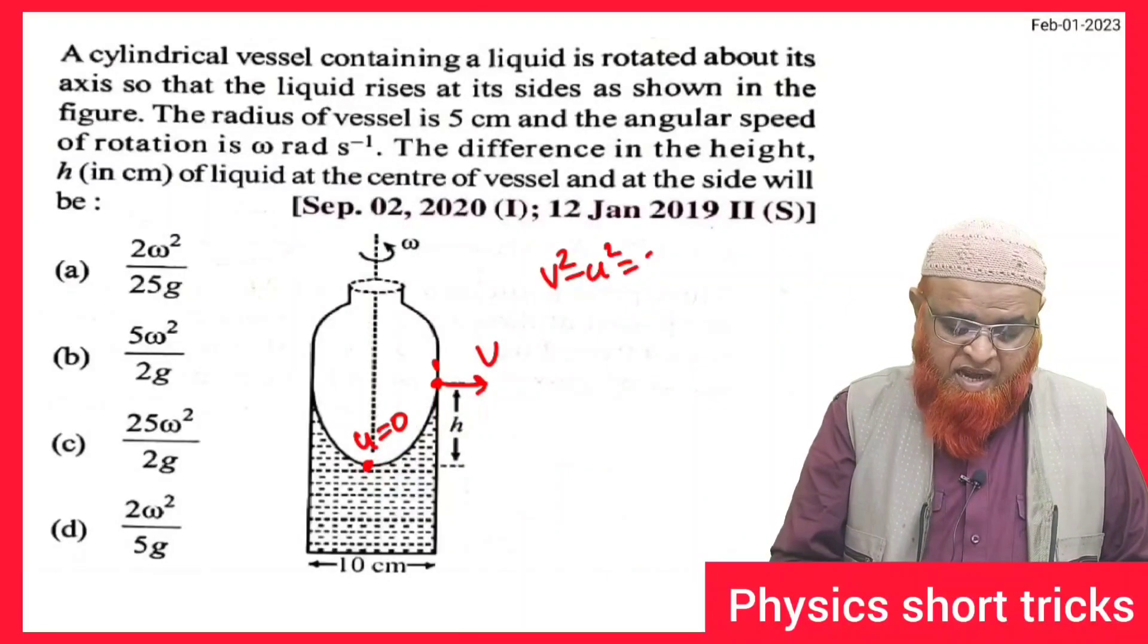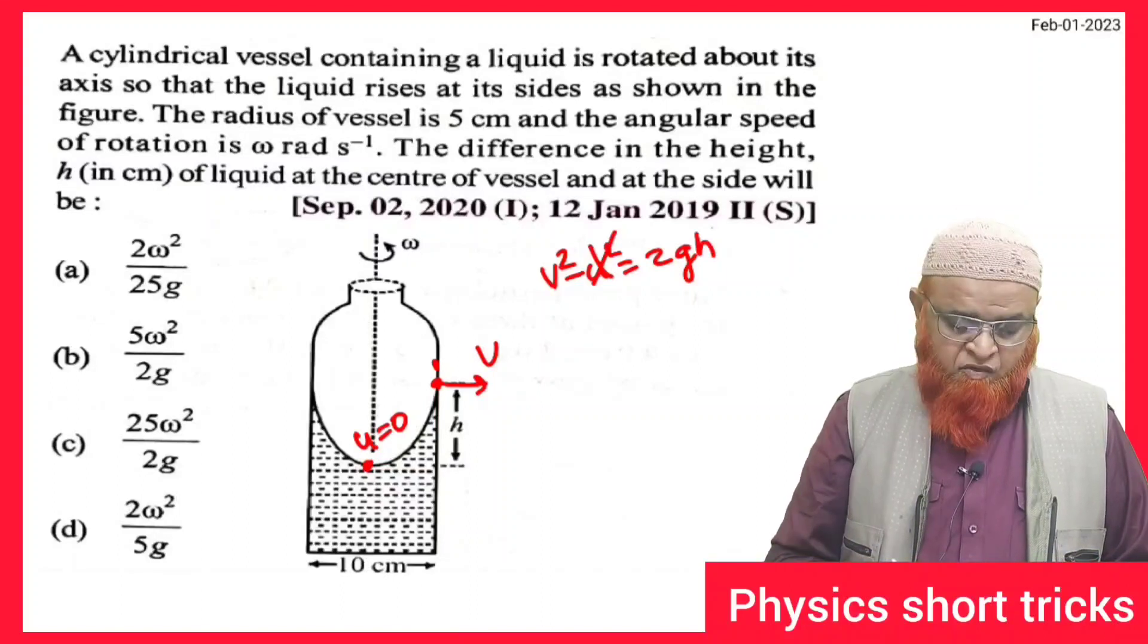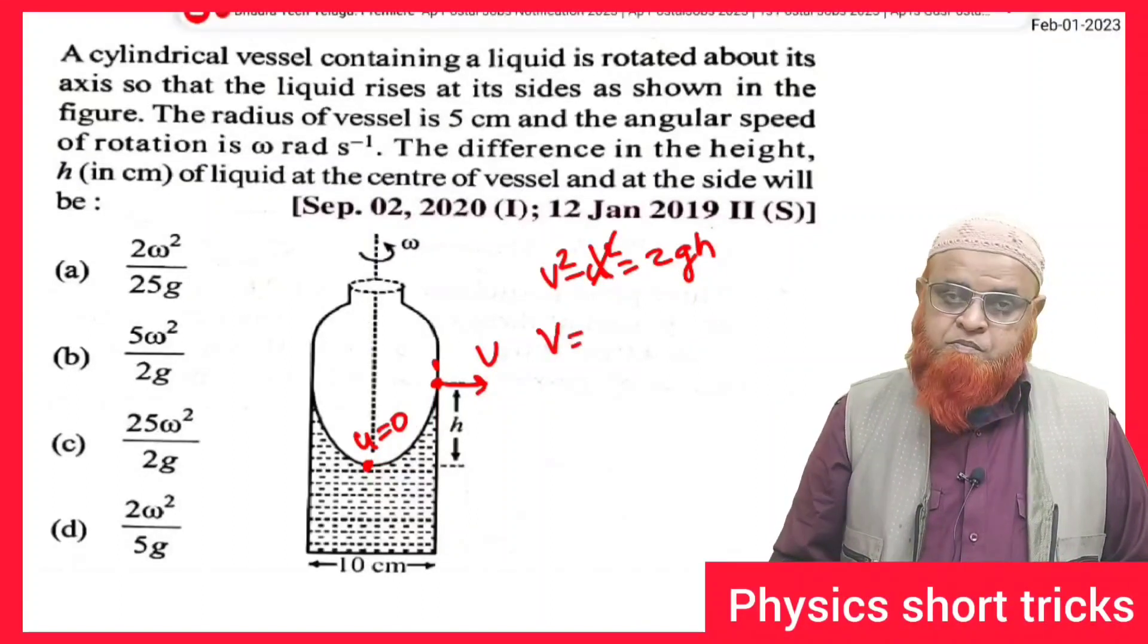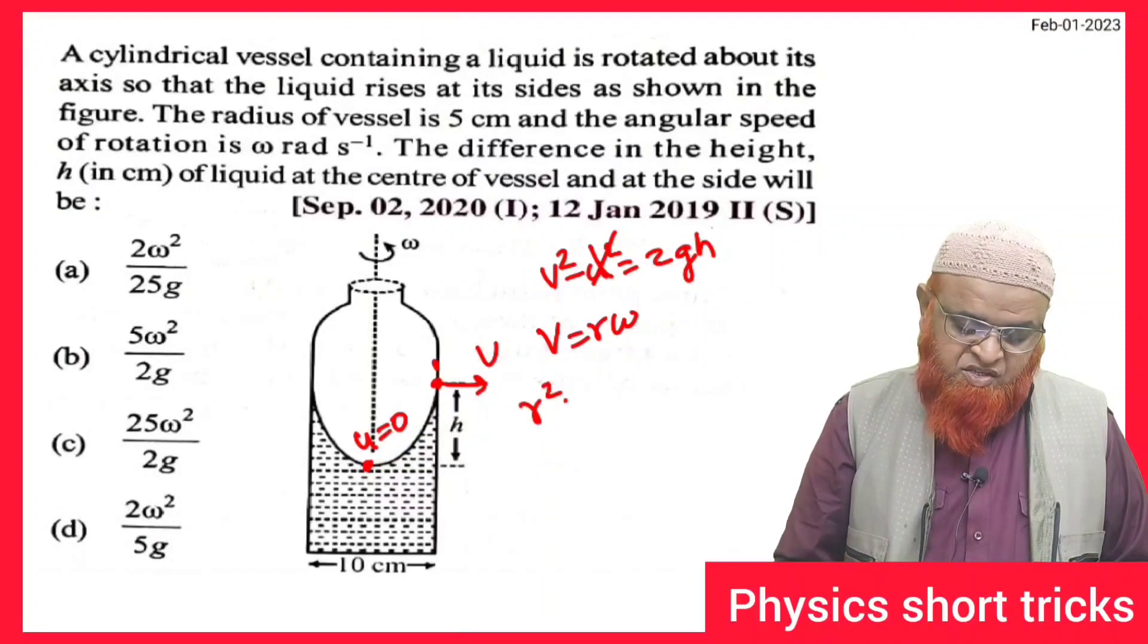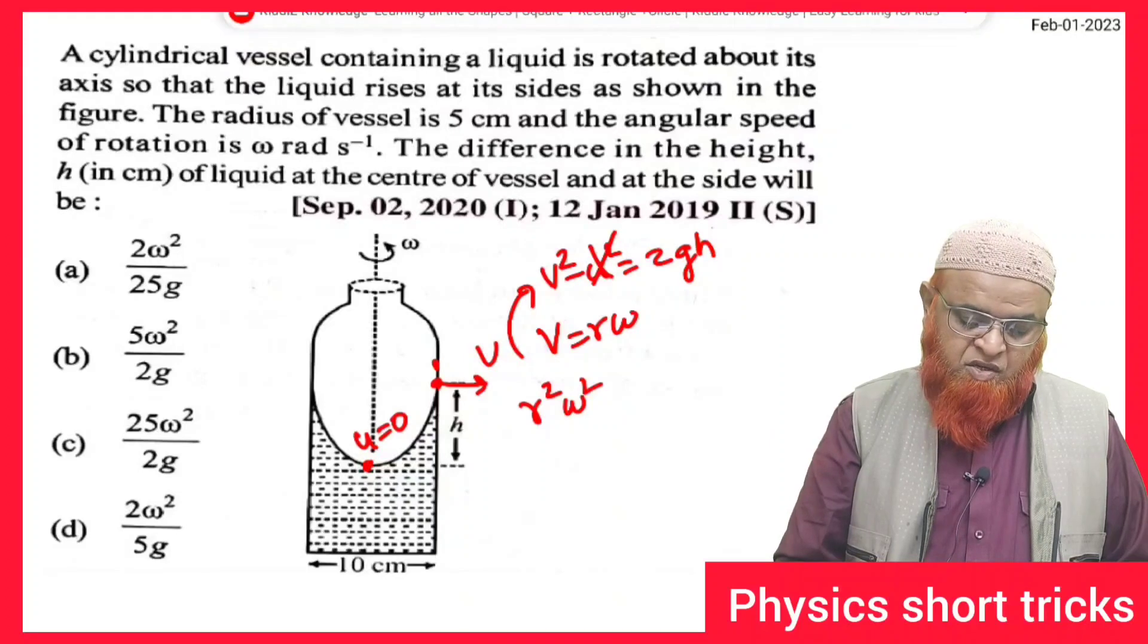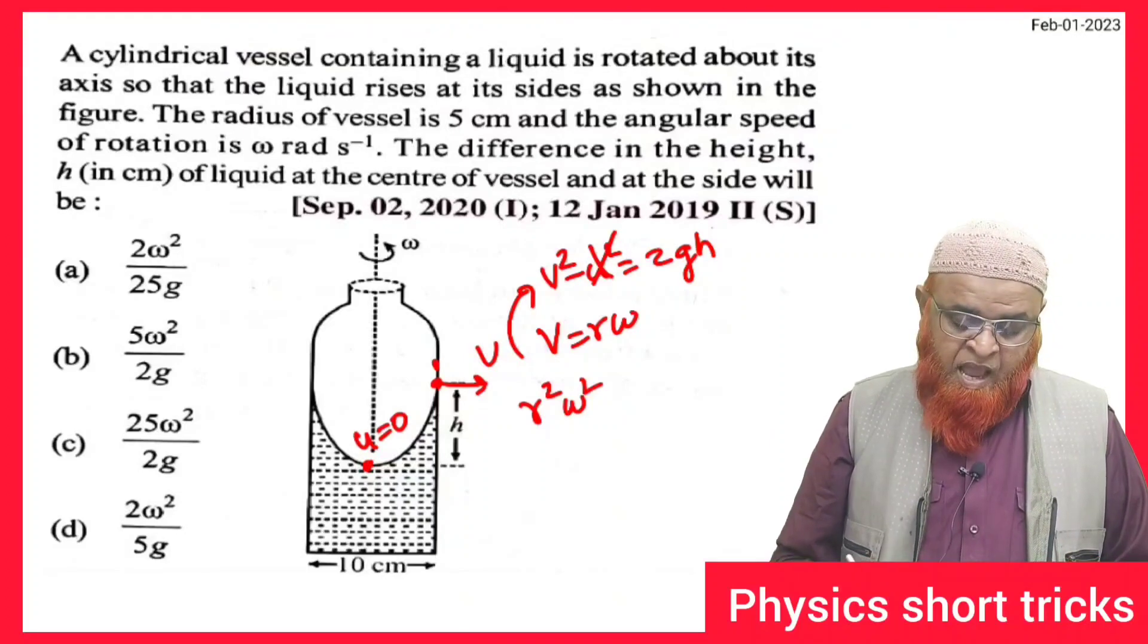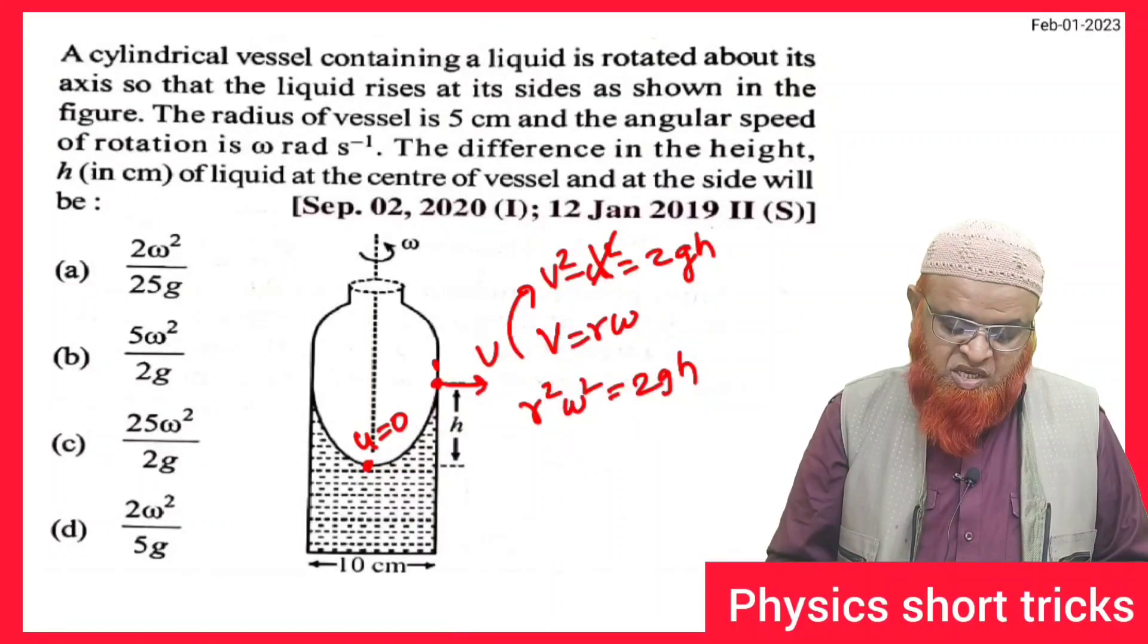I can tell you a shortcut formula - that is the kinematics formula. I can write v² - u² = 2gh, where u is taken as 0. And you all know that v = rω. You can write r²ω² instead - in the place of v, you can substitute this value and you can get r²ω² = 2gh.